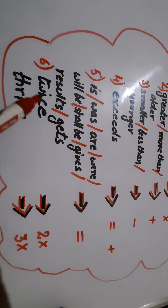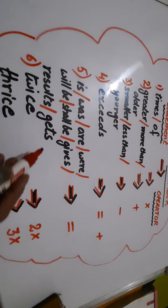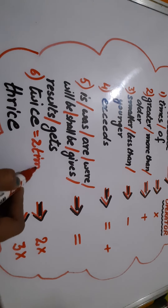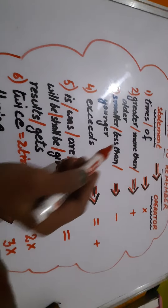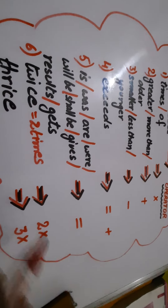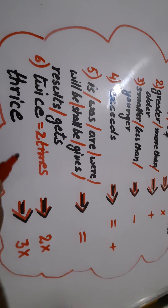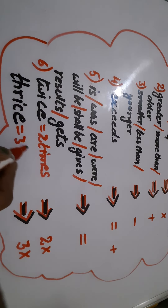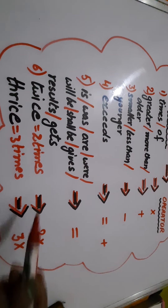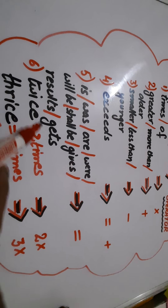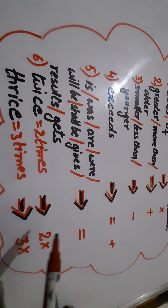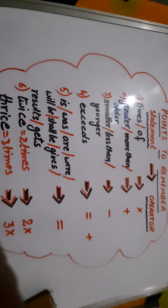Next we have 'twice'. Twice means two times. And for 'times' we use multiply, so twice means two multiplied by. Similarly, 'thrice' means three multiplied by, means three times. So multiplication: for 'times' we use multiply; if it's twice, two comes; if thrice, three comes. Similarly for four times, five times, we use these words.